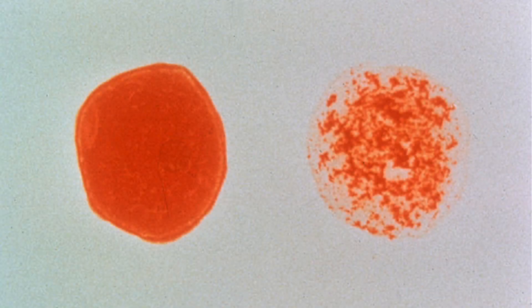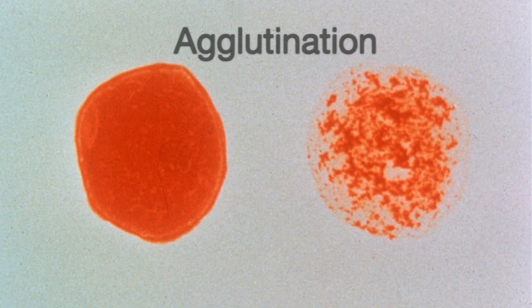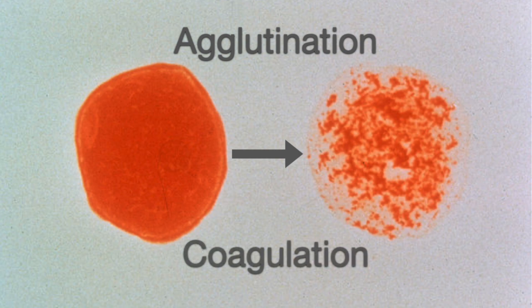One term used for clotting or clumping is agglutination, which is usually used for in vitro clotting or clumping, like in petri plates when doing blood typing. Coagulation refers to in vivo clotting or clumping, meaning inside the human body, which can have detrimental effects.